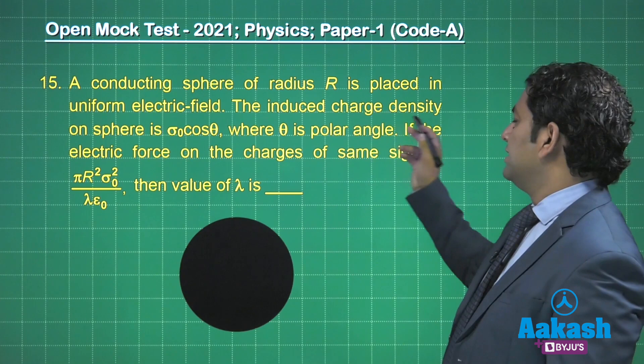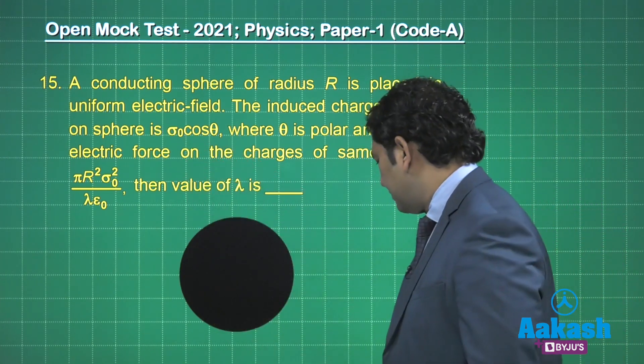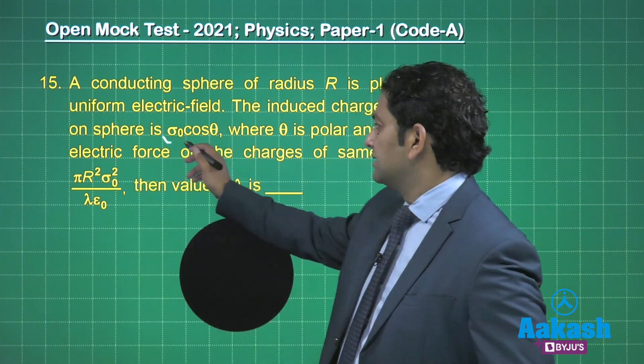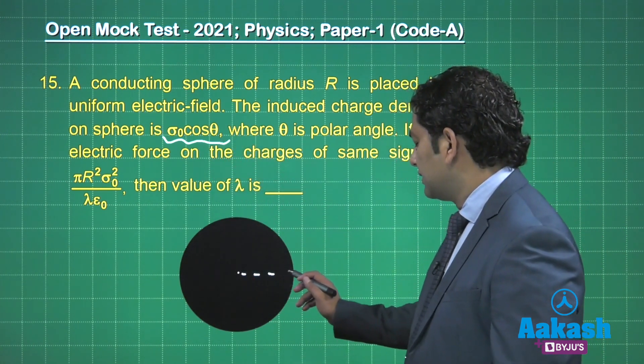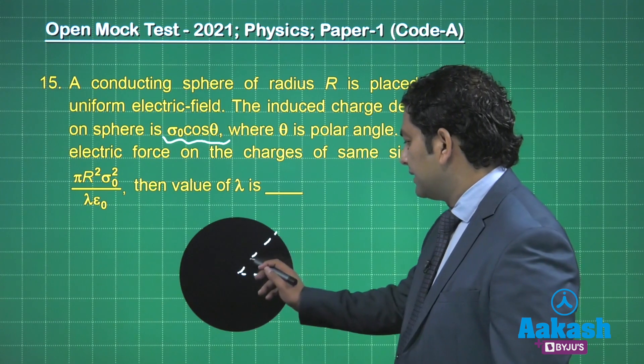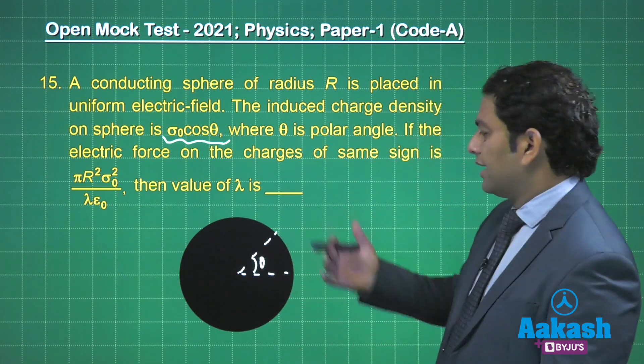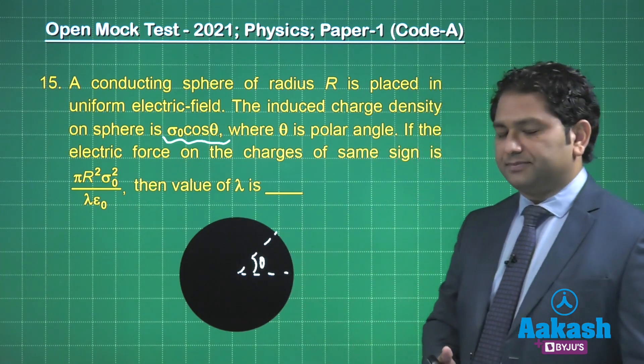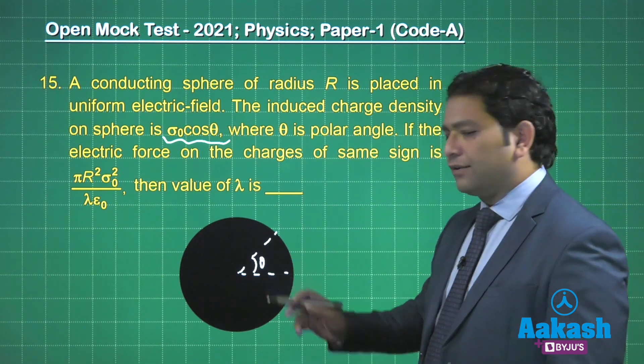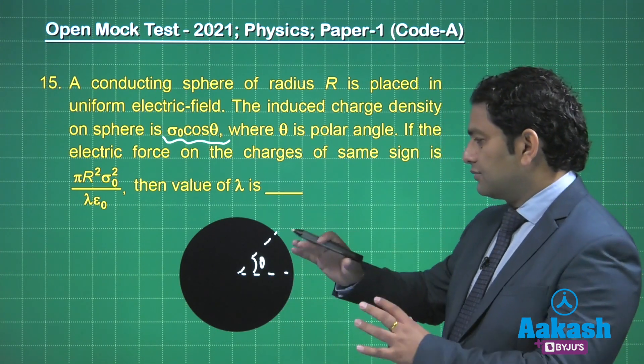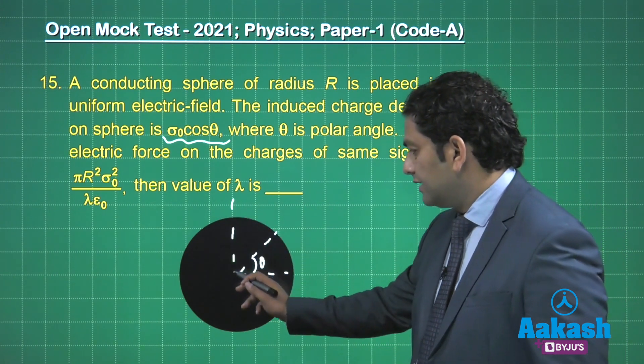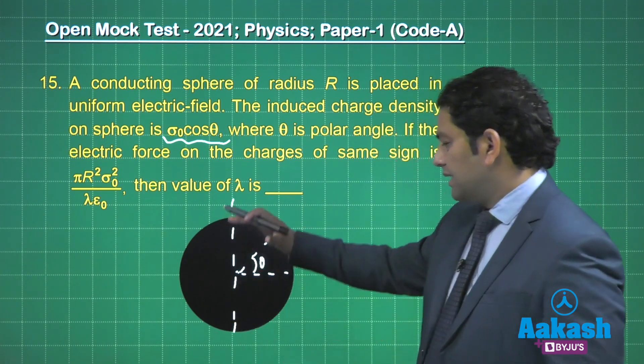The conductor here. It says if it's kept in a uniform electric field, the induced charge density is given by this expression σ₀cosθ. Here at any angle θ, the polar angle is θ. That means the first and fourth quadrant would be positive - that would make the entire right hemisphere positive.